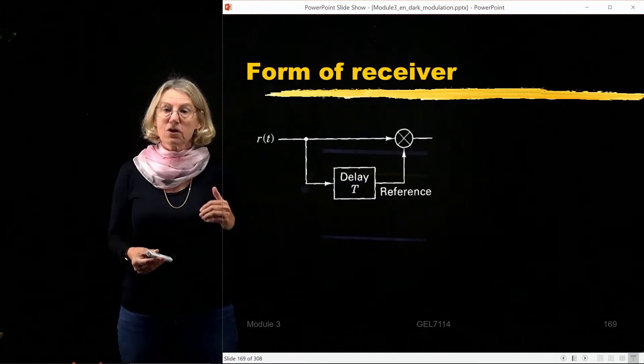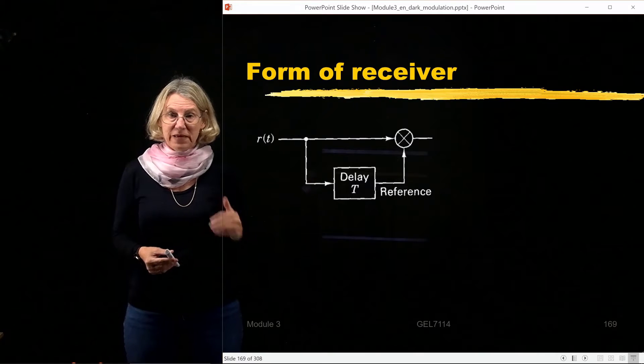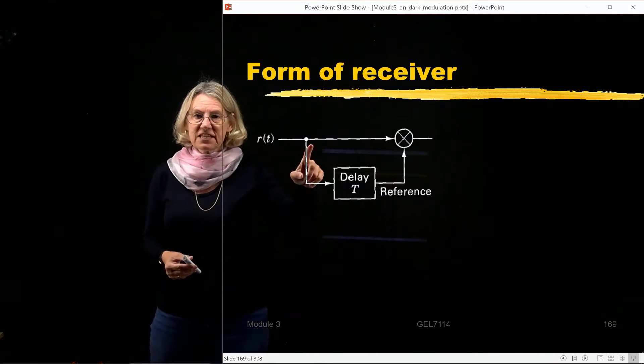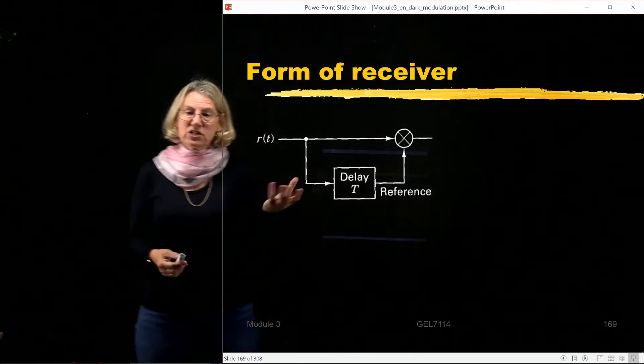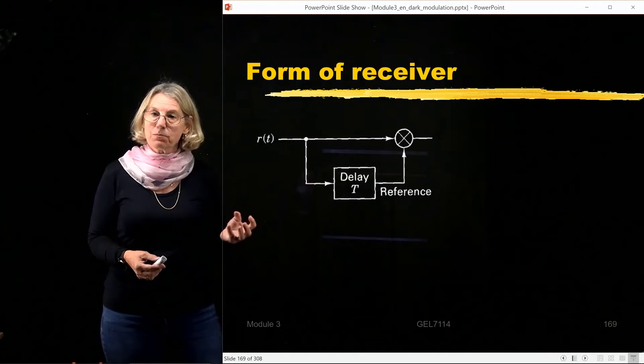Instead, what I'm going to do in my new receiver for non-coherent detection of PSK, I'm going to take the receive signal and split it in two. And one of the branches I'm going to just delay, delay by one symbol period,